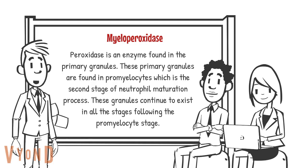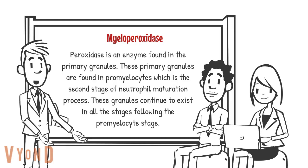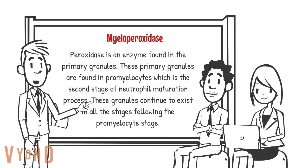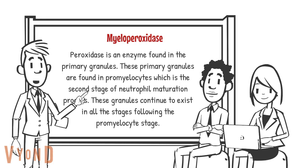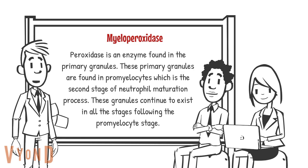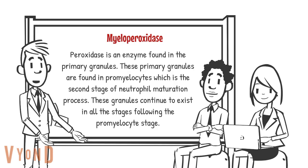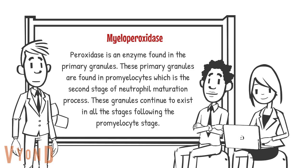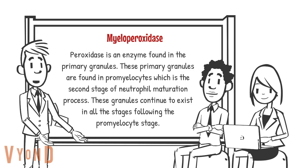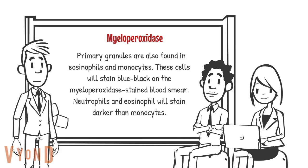Peroxidase is an enzyme found in the primary granules. These primary granules are found in promyelocytes, which is the second stage of the neutrophil maturation process. These granules continue to exist in the stages following the promyelocyte stage.